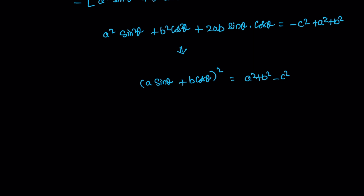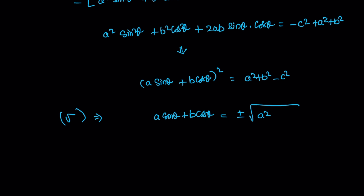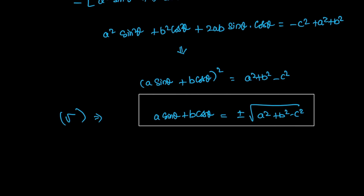Therefore, taking the square root of both sides: a sinθ plus b cosθ is equal to plus or minus square root of (a² plus b² minus c²). This completes the proof.